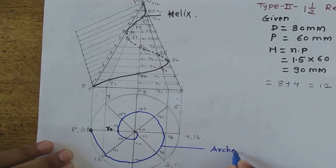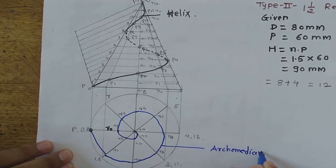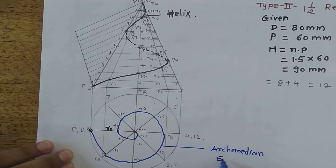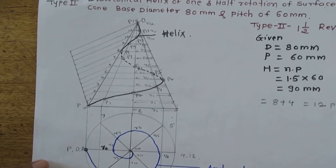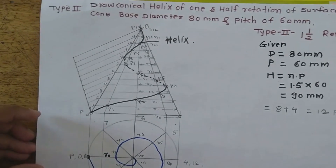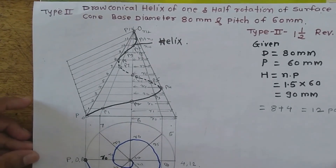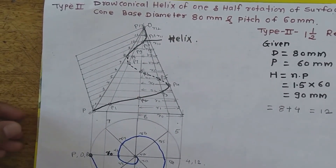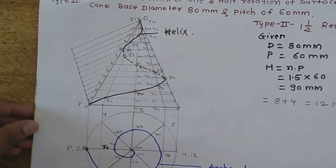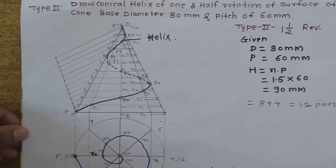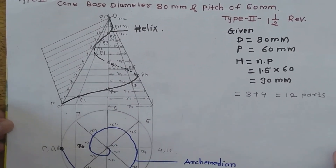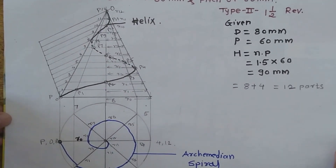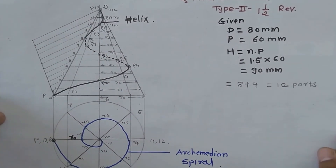This spiral viewed from the top is known as an Archimedean spiral. We have now completed the problem on conical helix for one and half revolution. If you have any query regarding this, you can write in the comment box. Thank you.